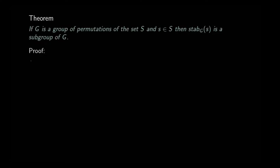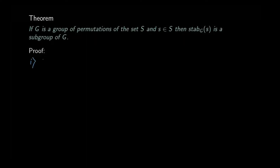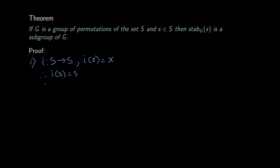Now let us prove that the stabilizer of s is a subgroup of G. To prove this, we first need to show that the identity element in G is in the stabilizer of s. The identity element in G, say I, is the bijection from S to S that takes every element to itself, and hence in particular the identity element takes s to itself, which means that the identity element is in the stabilizer of s.